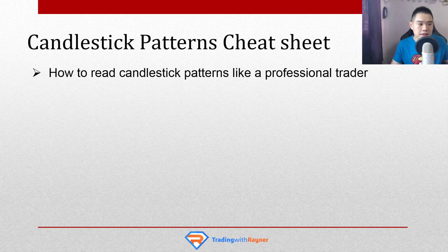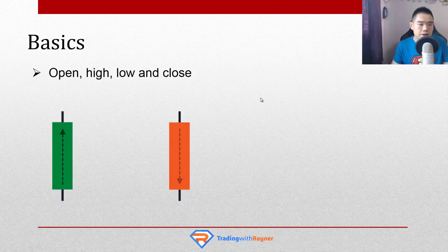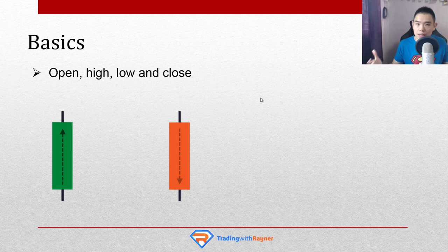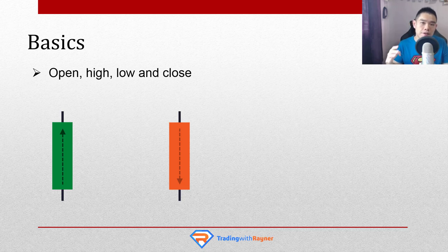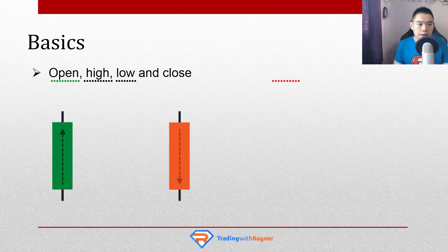So let's kick things off. First and foremost, the basics. Candlestick patterns is a way to show prices on your chart, and it's not the only way — you have stuff like bar charts, line charts, etc. Candlestick patterns is one of the more popular approaches. When you are dealing with candlestick patterns, you must be aware that there are four price points for every candle on your chart: the opening price, the high, the low, and the close.